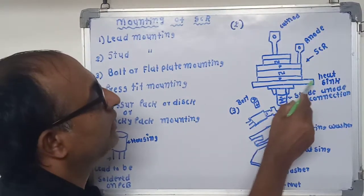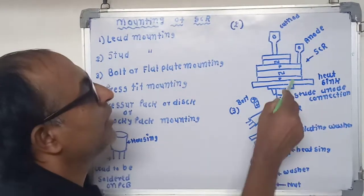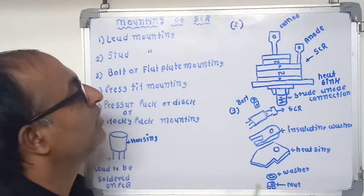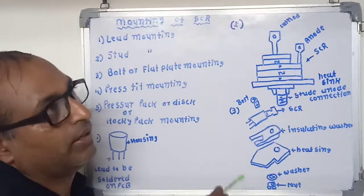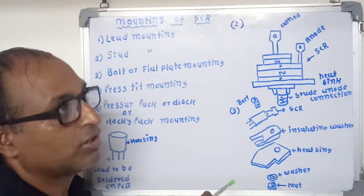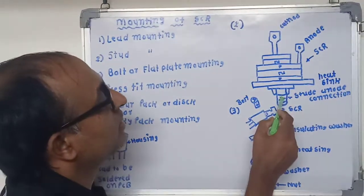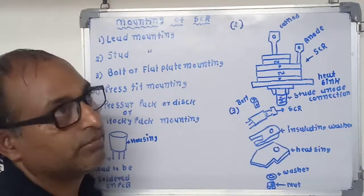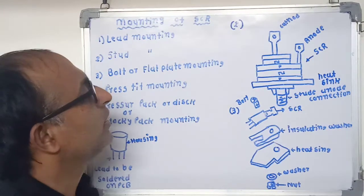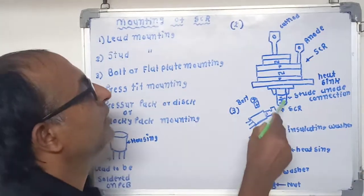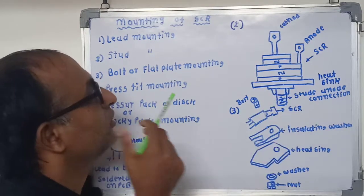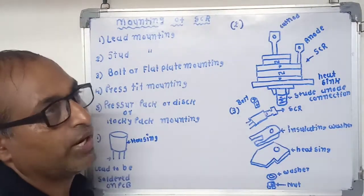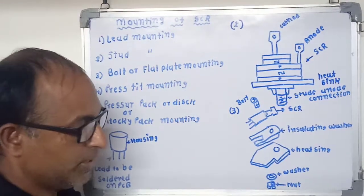The SCR gets directly connected to the heat sink, but sometimes it is not desirable. For that, mica or PTFE paper washers are kept between the studs and heat sink. This provides electrical isolation between the anode and heat sink. Stud type mounting is used for low and medium voltage rating of the SCR.